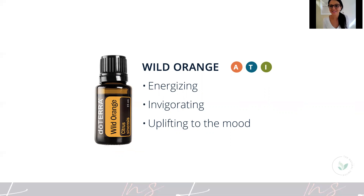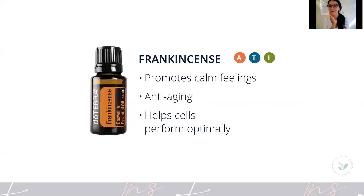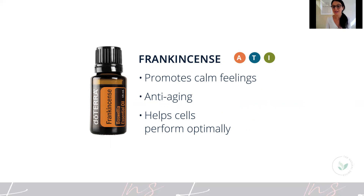Wild Orange — my boys call this the happy oil. It's very energizing, it smells delicious, it's very invigorating and uplifting for the mood. It's very popular for stress as well when you mix it with lavender. You can make treats with this one too — it's a food grade oil, so you can pop it in raw chocolate and it will taste like Jaffa balls. Frankincense — I think of this as the best anti-aging product I have ever used. I had a lot of acne scarring from when I was in my teens and it has really helped clear that up. A lot of people use it for anti-aging, fine lines and wrinkles. It promotes a sense of calm — great for meditation, yoga, and before bedtime if you want a good night's rest. It also helps the body respond in a healthy way to inflammation.